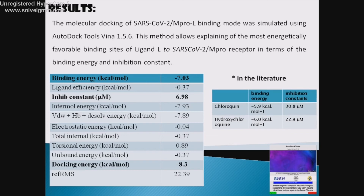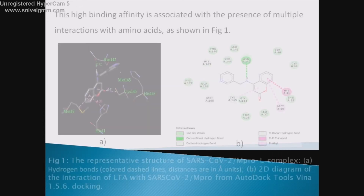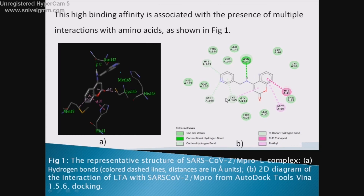Comparing the results found in this work with those reported in the literature, we found that both molecules chloroquine and hydroxychloroquine present low binding energy and considerable values of inhibition constant. This high binding affinity is associated with the presence of multiple interactions with amino acids, as shown in Figure 1.